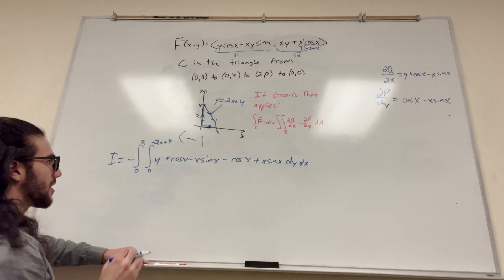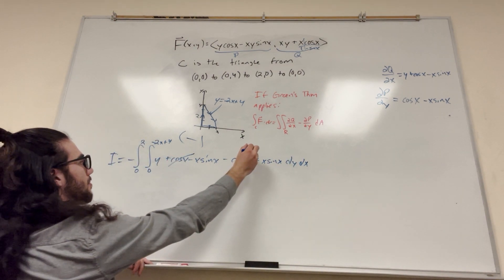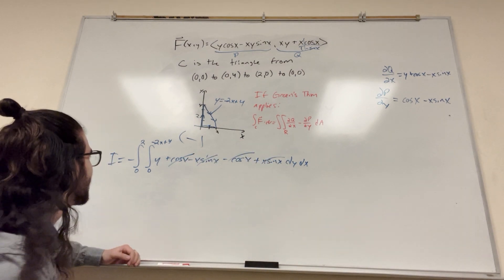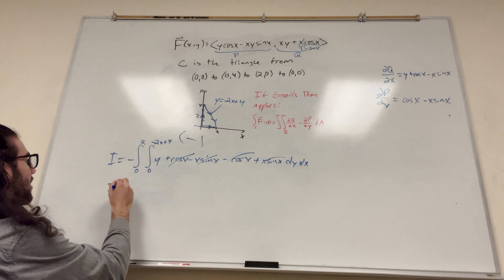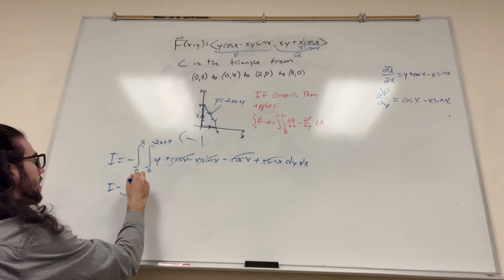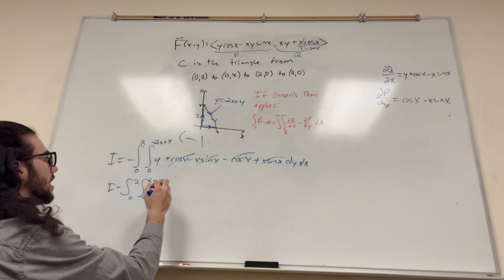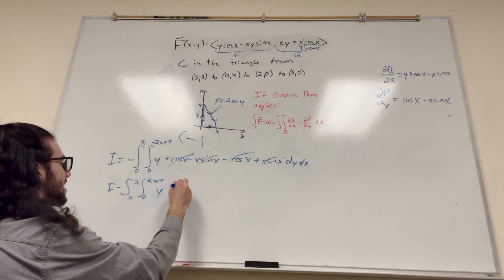Alright, so now you'll notice that these things are going to cancel out. Boom, boom. And then this is going to cancel, and it's going to leave us with a really simple integral. Alright, so don't forget your negative, you have to keep bringing that over. 0 to 2, 0 to negative 2x plus 4, and then just y dy dx. Pretty cool.